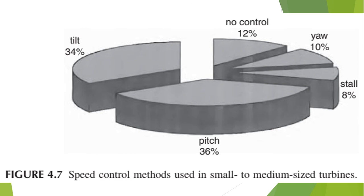This pie chart illustrates the speed control methods used in small to medium sized turbines. Pitch control accounts for 36%, tilt control for 34%, yaw for 10%, no control for 12%, and stall control for 8%.